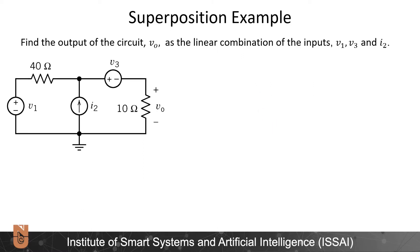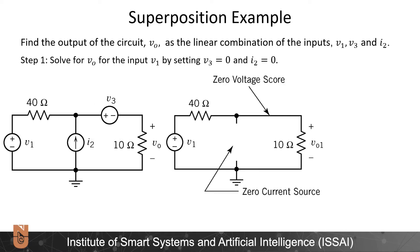Now we need to find the output of the circuit V0 as a linear combination of inputs V1, V3, and I2. This is a good example where we can utilize the superposition principle. Our first step is to calculate the output due to V1 by setting V3 equal to 0 — it acts as a short circuit — and I2 equal to 0, which acts as an open circuit. We end up with a simple voltage divider of 40 ohms and 10 ohms, giving V01 equal to 1/5 times V1.